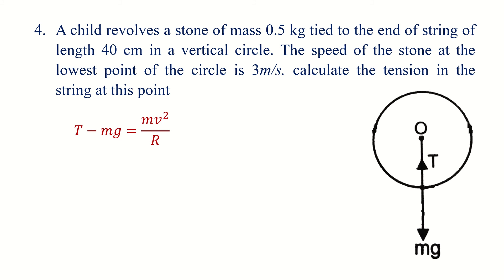Considering centripetal acceleration mv²/R in the direction of tension T, we have mv²/R equals T minus mg.